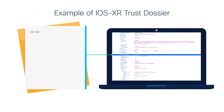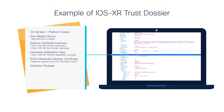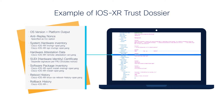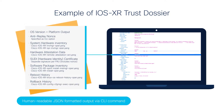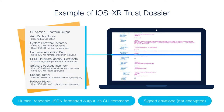Here is an example of how the runtime measurement looks. The iOS XR trust dossier provided by the device contains details of hardware inventory, installed software packages, runtime measurements, and a human-readable JSON format. The integrity of this dossier is ensured by signing the entire response using a key that is stored in a secure storage location, protected by the trust anchor module in the hardware.